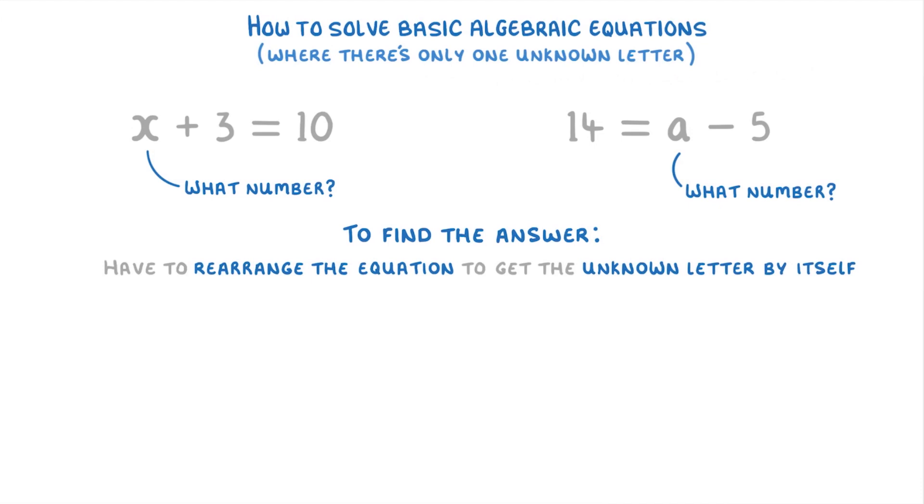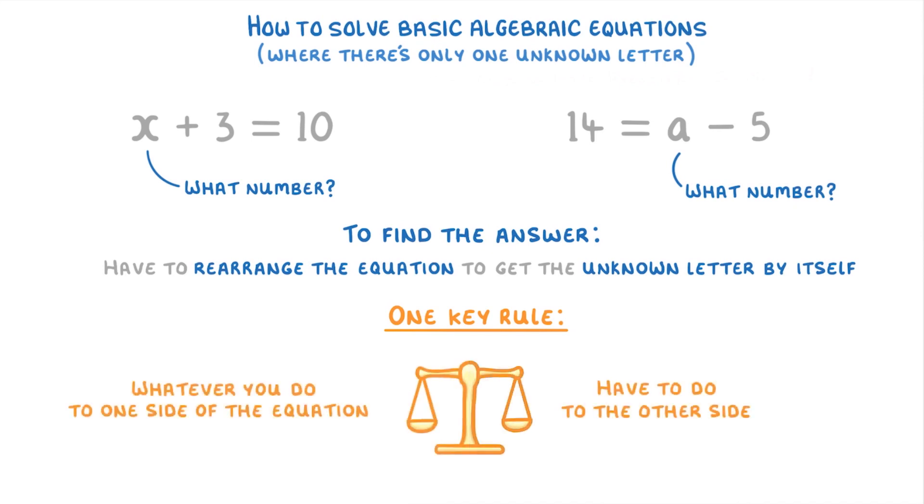Most of the time though, the questions will be a bit trickier, and in order to find the answer you'll have to rearrange the equation to get that unknown letter all by itself. Whenever you rearrange equations though, there's one key rule that you have to remember: whatever you do to one side of the equation, you have to do to the other side of the equation as well. If you don't do this, then the two sides won't actually be equal to each other anymore and the equation won't be correct.